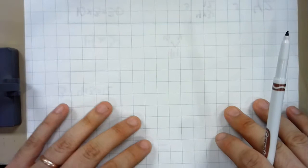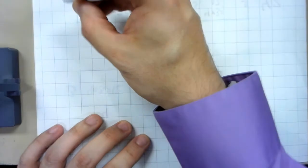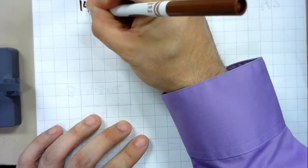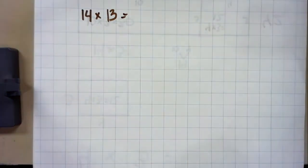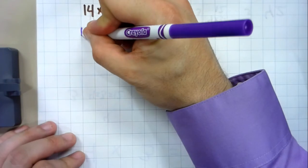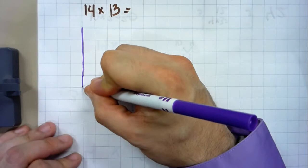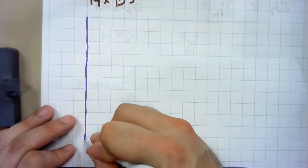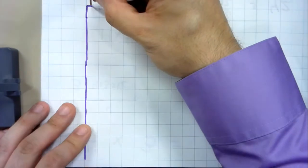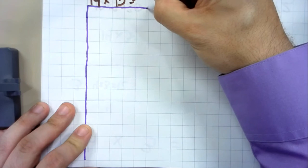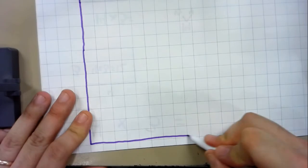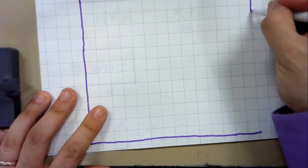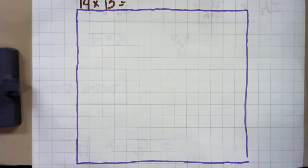Another option is to do this with two-digit by two-digit. Let's say 14 times 13. I'll start by drawing a rectangle that's 14 units wide by 13 units tall. This rectangle represents 14 times 13.